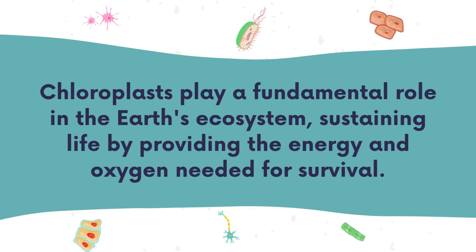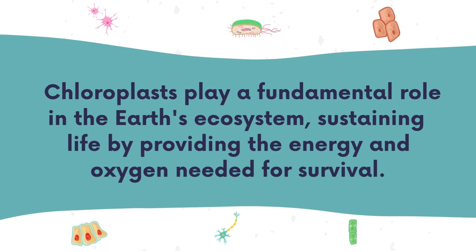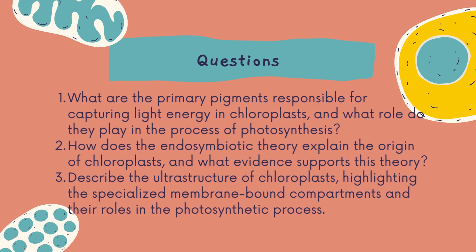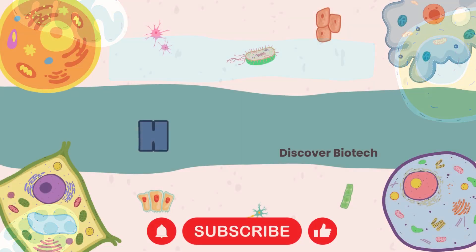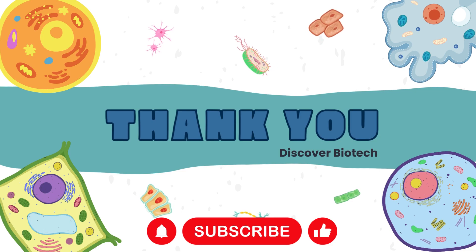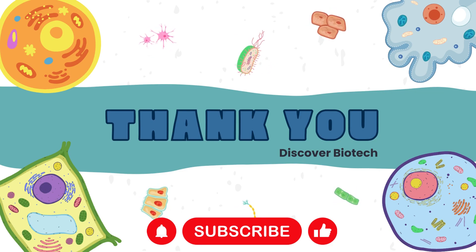Chloroplasts play a fundamental role in the Earth's ecosystem, sustaining life by providing the energy and oxygen needed for survival. Here are some research questions related to the topic. Number 1: What are the primary pigments responsible for capturing light energy in chloroplasts, and what role do they play in the process of photosynthesis? Number 2: How does the endosymbiotic theory explain the origin of chloroplasts, and what evidence supports this theory? Number 3: Describe the ultrastructure of chloroplasts, highlighting the specialized membrane-bound compartments and their roles in the photosynthetic process. That's all from this lecture. See you in the next video for lecture number 6. And let's not forget to subscribe to this channel.